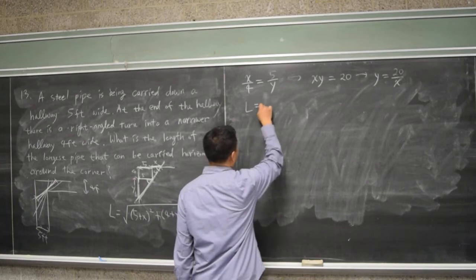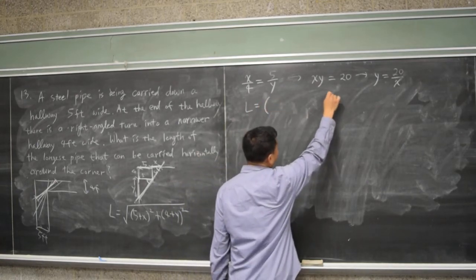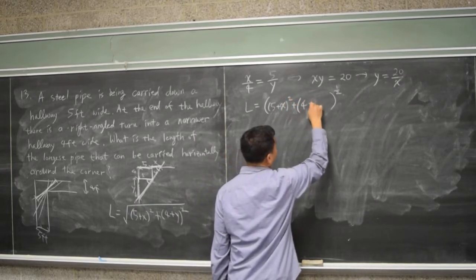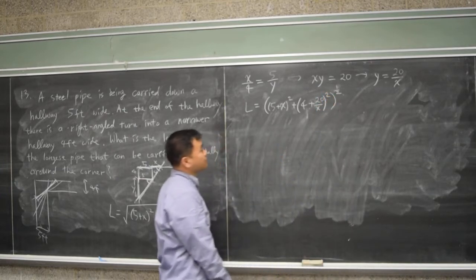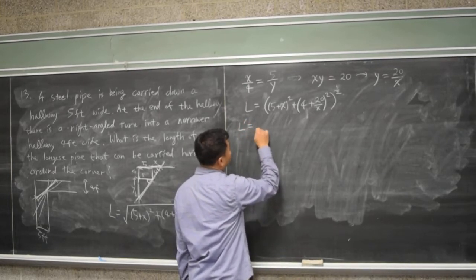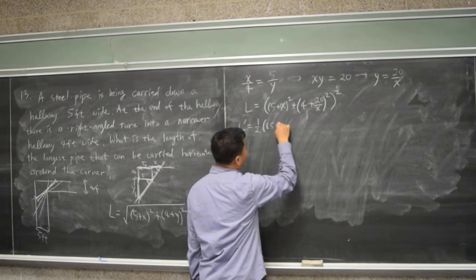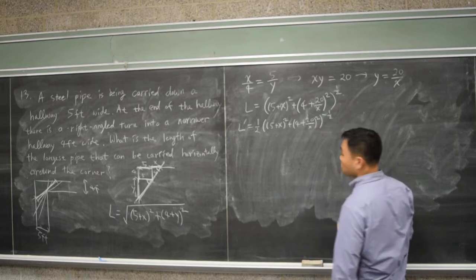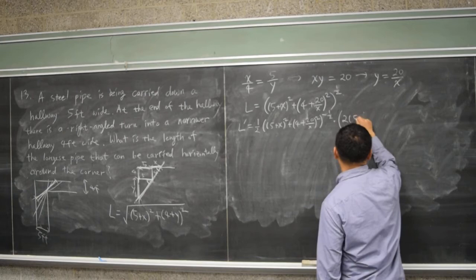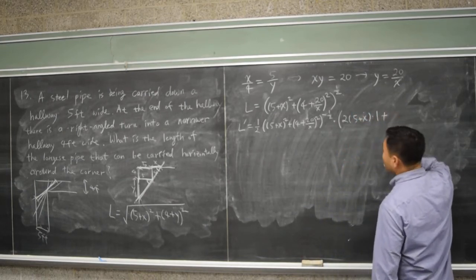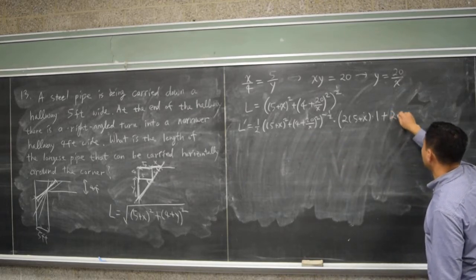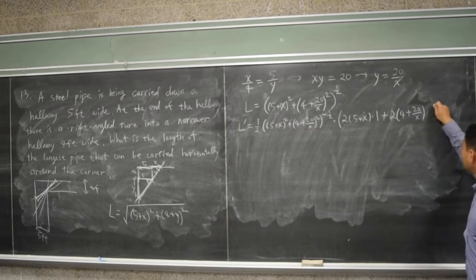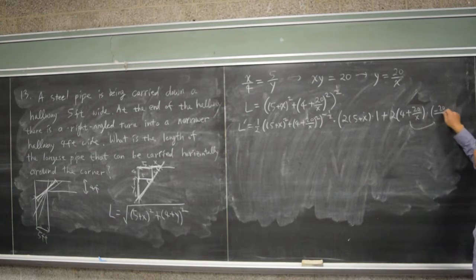Now L is a function of a single variable. Writing it with a one-half power because that is easier to differentiate: L equals the quantity five plus x, squared, plus four plus twenty over x, squared, to the one-half. Differentiating: one-half times that quantity to the negative one-half, times two times five plus x, plus two times four plus twenty over x times negative twenty over x squared.